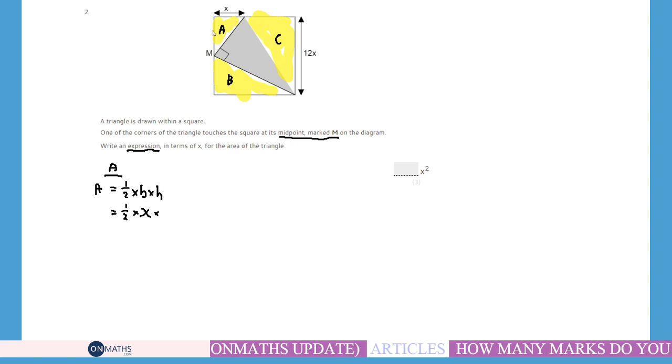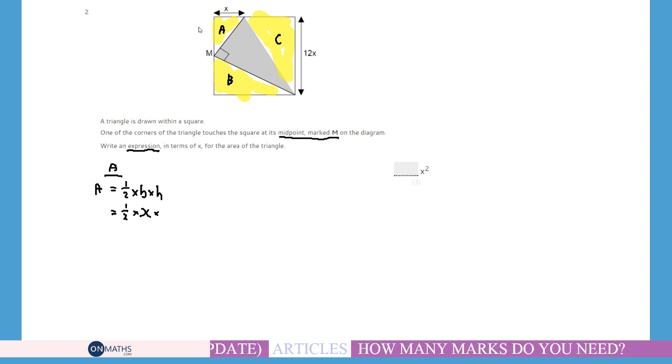This one's nice and easy. This one's just X. Now this one doesn't have a label, but it does say in the question that M is the midpoint. So if M is the midpoint and the whole distance is 12X, then this one is going to be 6X. So it's going to be times 6X. Now when I do X times 6X, I get 6X squared. And half of 6X squared is just 3X squared. Okay, one down, two to go.